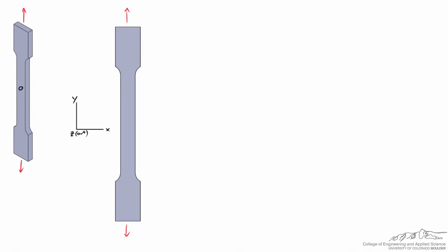Here the sample is drawn with x to the right, y upward, and z acting straight out at us. The machine applies a force in the upward direction at the top and downward at the bottom. It's intuitive that the material is under a normal stress — we use sigma for that. Sigma equals the force divided by the area. If we make a hypothetical horizontal cut, the cross-section has width A and depth B into the screen, so that area is A times B.